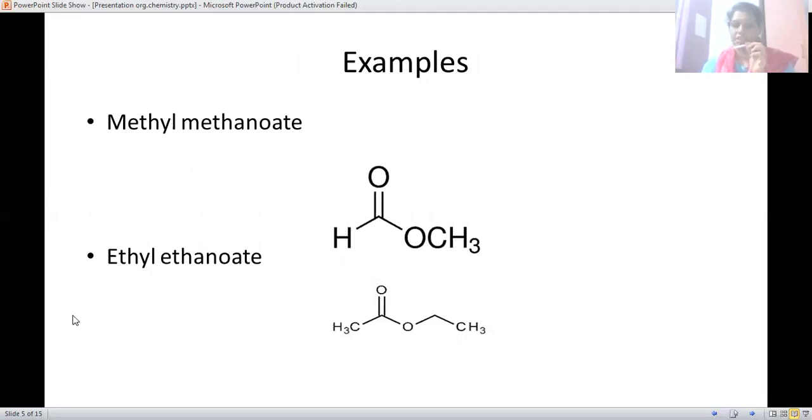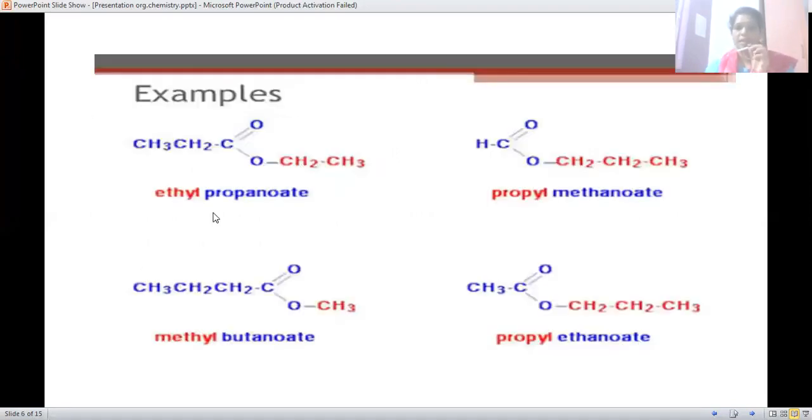This is the structure of ethyl ethanoate. These are the structures of ethyl ethanoate or methyl methanoate. This is ethyl propanoate structure. The red indicates the suffix of the structure, prefix of the structures, and the blue also indicates the suffix of the structure or some type of prefix of the compound which is dependent on the structure where it is present.